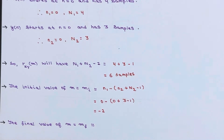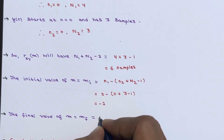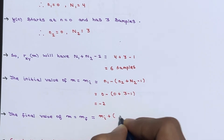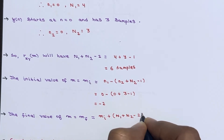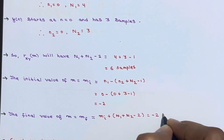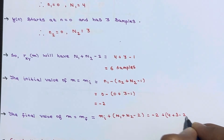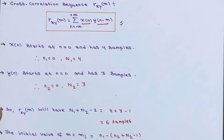The final value of m, m_f, equals m_i + N1 + N2 - 2, which gives -2 + 4 + 3 - 2 = 3. So the initial value of m is -2 and the final value of m is 3. These values will be used in the correlation formula.